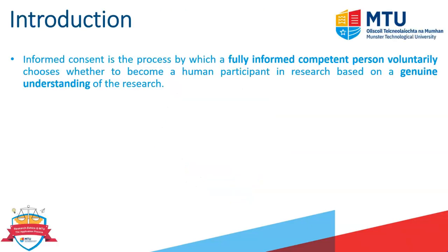First, it's important to highlight what we mean by the process around informed consent, which is where human participants who are going to be involved in research are fully informed, competent, and will be getting involved voluntarily, and have an understanding of what the research actually is. So the human participant needs to be fully informed, needs to be competent, needs to participate voluntarily, and needs to have a genuine understanding of the research. There's a lot of responsibility on us as researchers to fulfill this obligation toward participants in our research study.